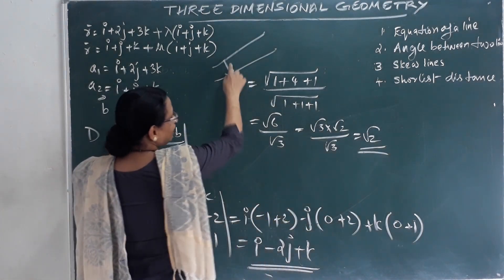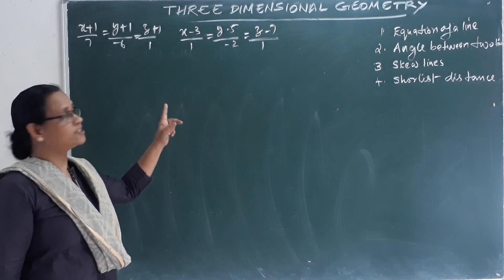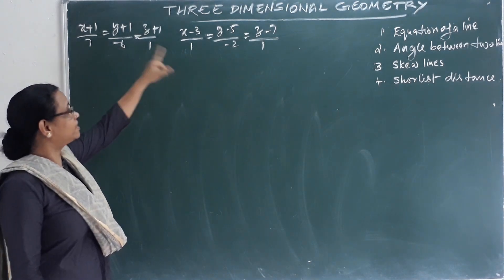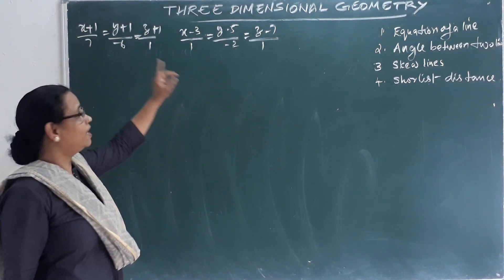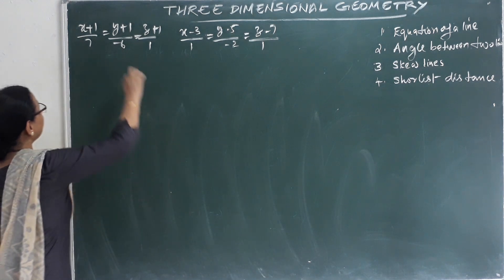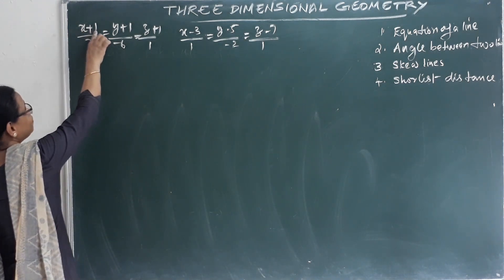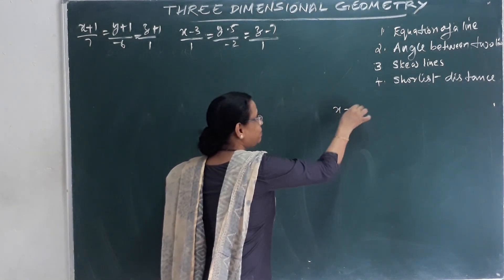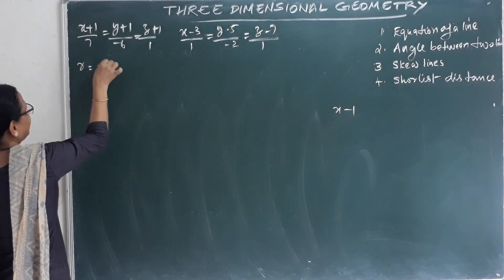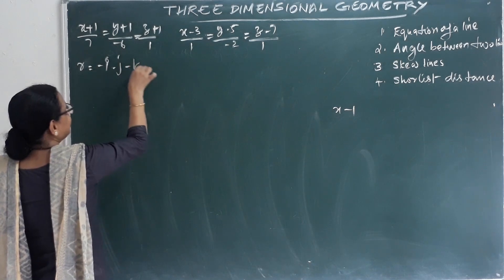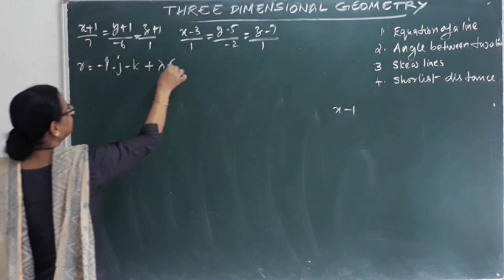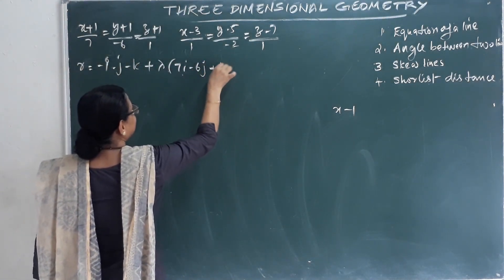Now we have two more lines and need to find the shortest distance between them. We convert the Cartesian equations into vector equations. The first equation involves x plus 1. Converting, we get r equal to minus i minus j minus k plus lambda times the direction vector 7i minus 6j plus k.